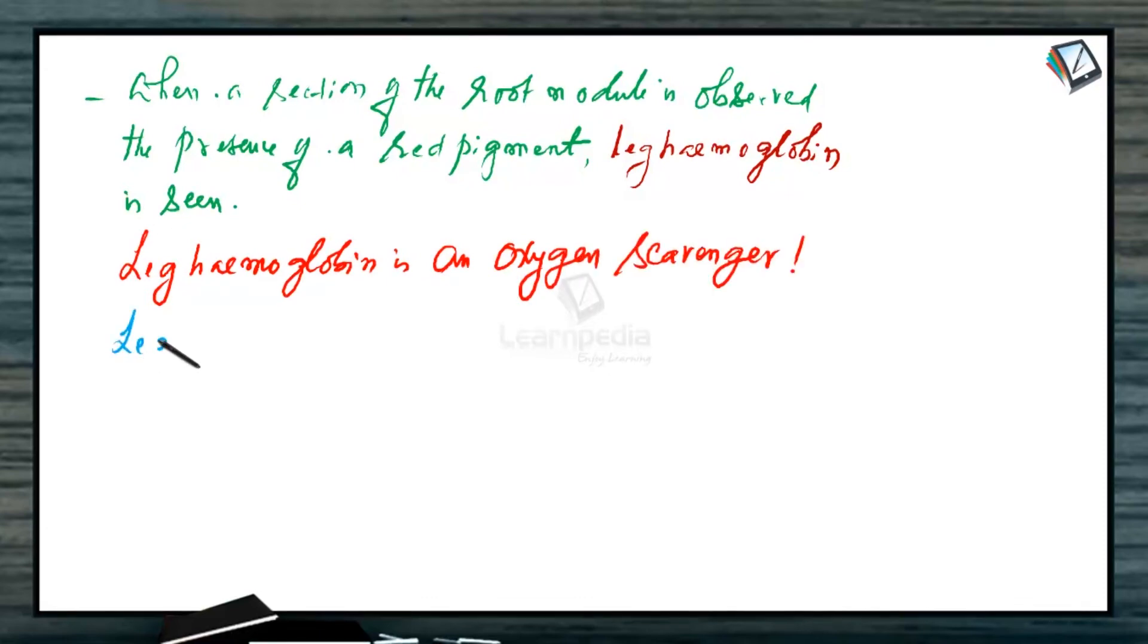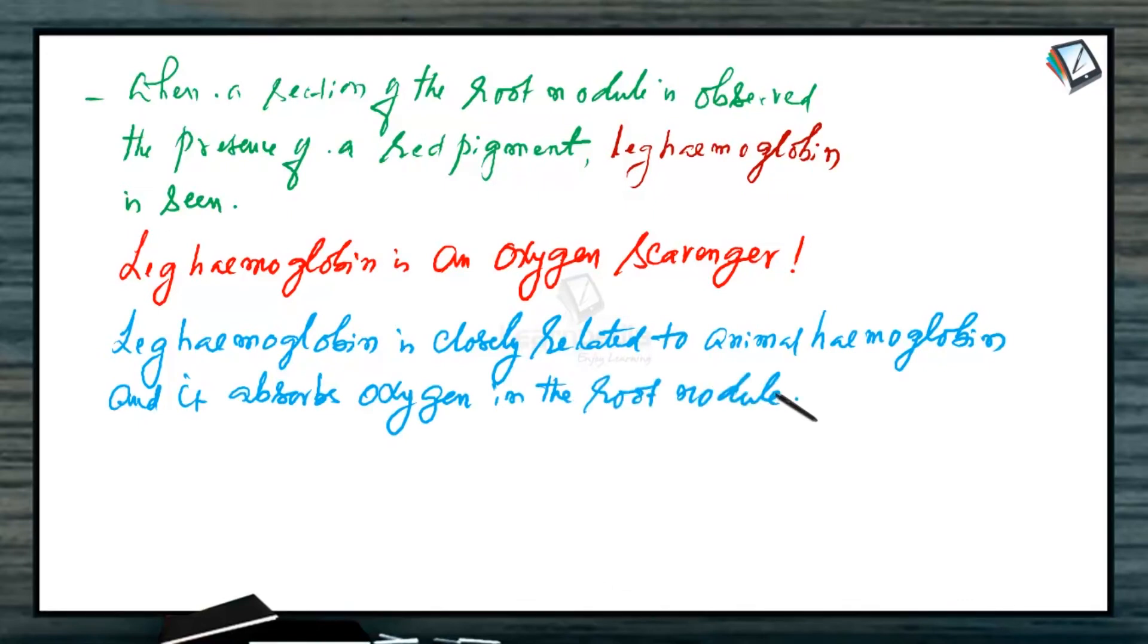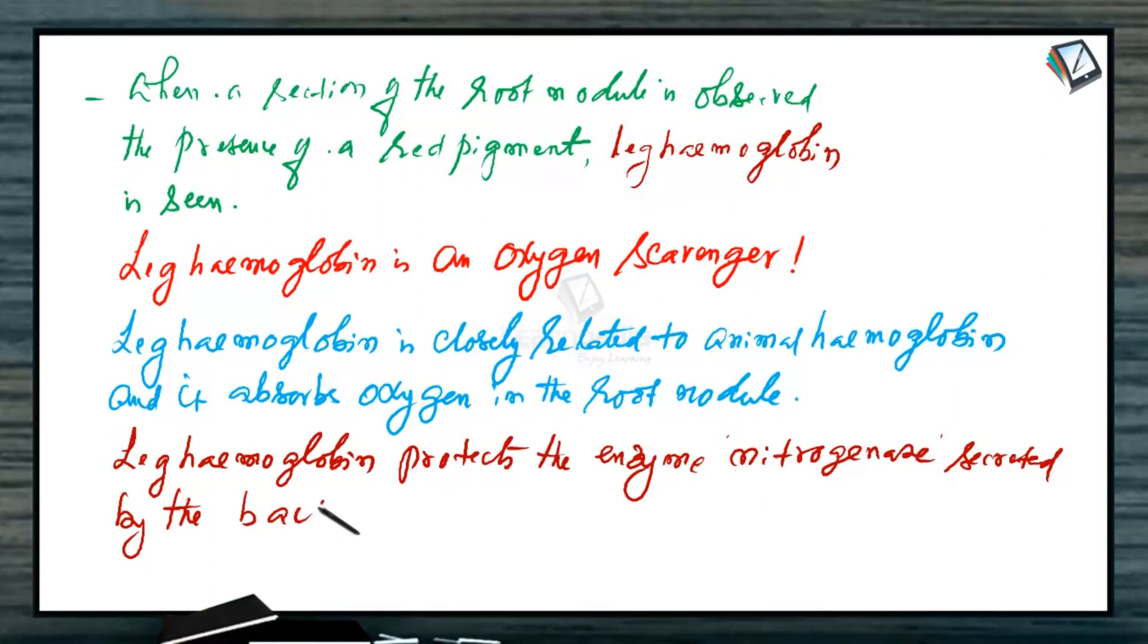Leg hemoglobin is closely related to animal hemoglobin and it absorbs oxygen in the root nodule. Do you know why this is required? Leg hemoglobin protects the enzyme nitrogenase secreted by the bacteroids. This enzyme nitrogenase is oxygen sensitive.